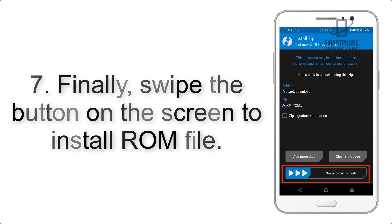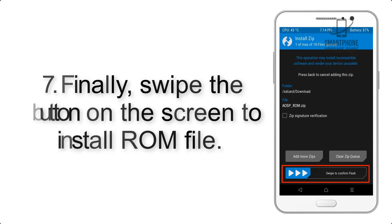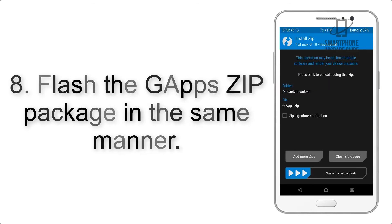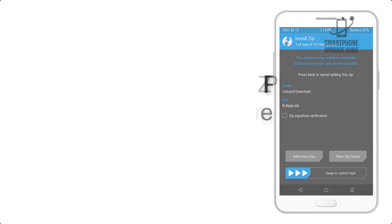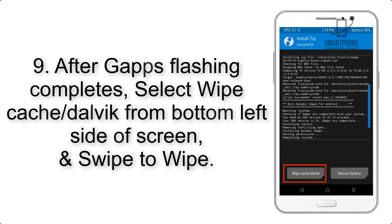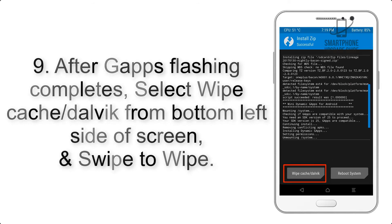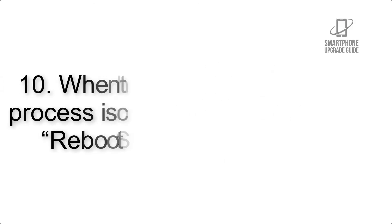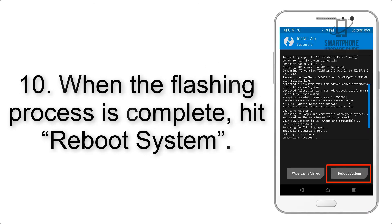Step 7: Swipe the button on the screen to install the ROM file. Step 8: Flash the GApps zip package in the same manner. Step 9: After GApps flashing completes, select Wipe Cache and Dalvik from the bottom left side of the screen and swipe to wipe.